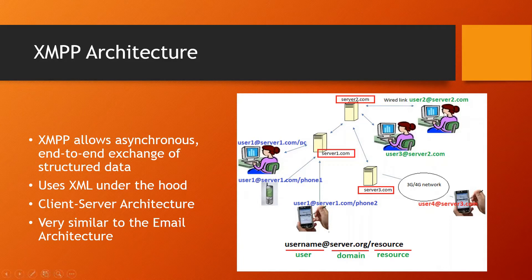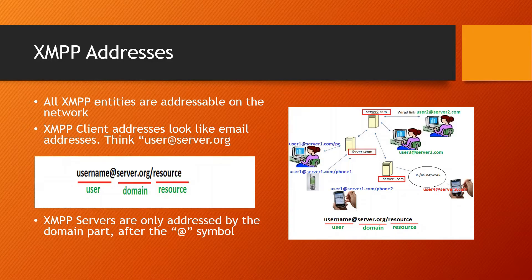XMPP is a client-to-server architecture — you have clients and servers. Now we're going to look at XMPP addressing: how do addresses in XMPP look and how do they work? A client in XMPP has an address that looks like an email. For example, we have user1 at server1.com — that is an address in XMPP.